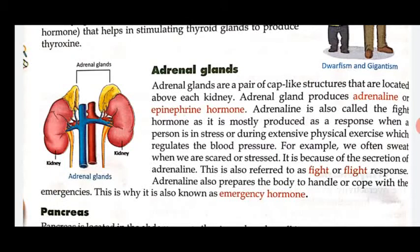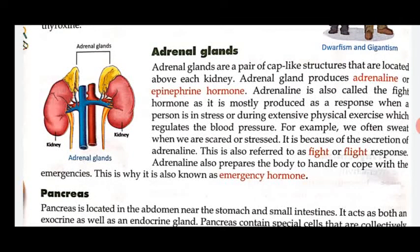Adrenaline is also called the fight hormone, as it is mostly produced as a response when a person is in stress or during extensive physical exercise. It regulates blood pressure. Adrenaline is the fight hormone — it is released during stress and physical exercise and regulates blood pressure in our body.